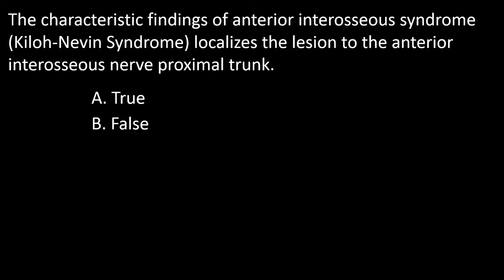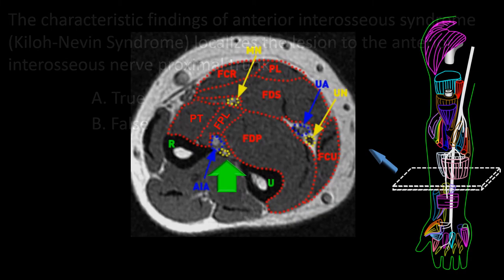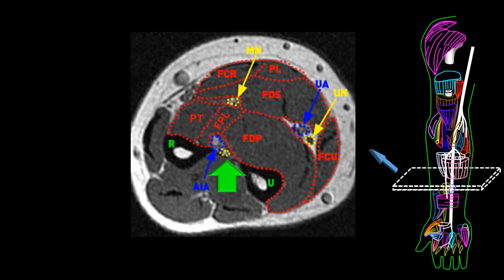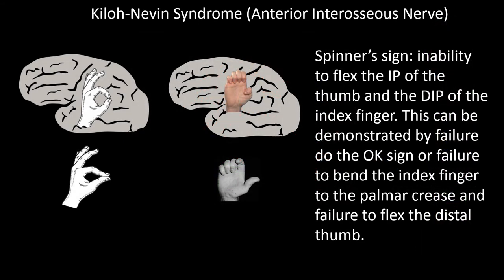Next question: the characteristic findings of anterior interosseous syndrome — also called Kiloh-Nevin syndrome — locates the lesion to the anterior interosseous nerve proximal trunk. A: true, B: false. The arrow in this frame points to the interosseous membrane and the anterior interosseous nerve right in front of it. A lesion in this nerve produces typical manifestations. An anterior interosseous nerve injury produces weakness of pronation especially when the elbow is flexed, weakness of the flexor pollicis longus producing inability to flex the tip of the thumb, and weakness of the flexor digitorum profundus producing inability to bend the tip of the middle and index fingers.